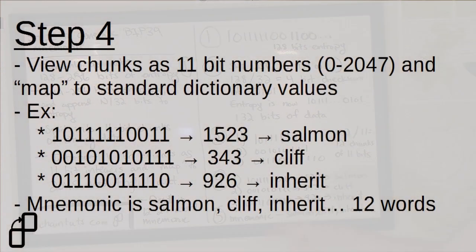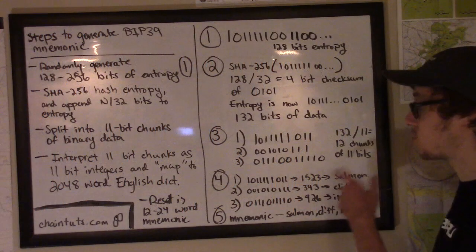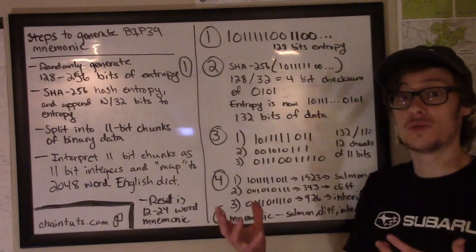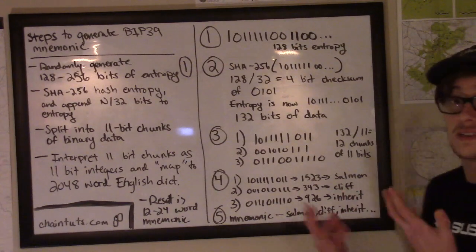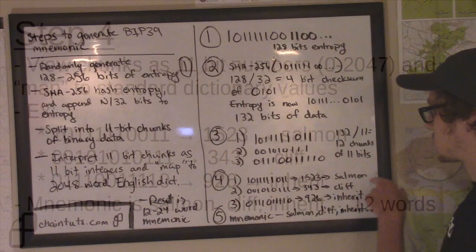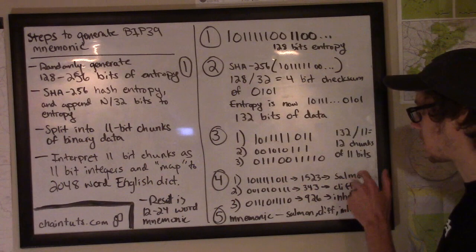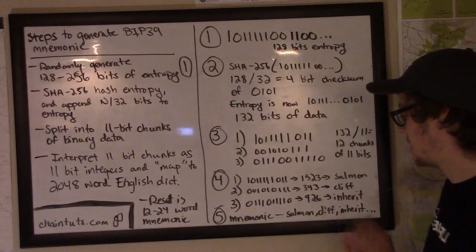So for example, if we have this value that's 01111110011, interpreting that as an 11-bit integer gives us 1523 in decimal. So that's the actual index from 0 to 2047 used in this dictionary to determine what word we're going to use, so the 1524th word, because it's a zero-based index, gives us the word salmon. If we look at another example, we can see that this binary chunk here, starting in 0010, gives us a base 10 value of 343, which is the word cliff. And the final example we have here is index 926, which is the word inherit.